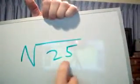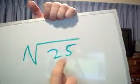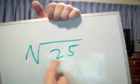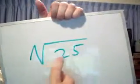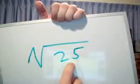And the number in question, which would be the 25 in this case, would be the radicand. This is the radical symbol and the number inside of it would be called the radicand.